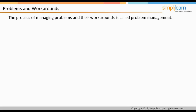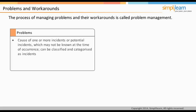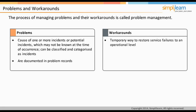The process of managing problems and solutions to problems is called problem management. In the context of ITIL, a problem is the cause of one or more incidents or potential incidents, and the cause may not be known at the time the incident occurs. Problems are classified and categorized as incidents and documented in problem records. A workaround is a temporary way to restore service failures to an operational level — for example, rebooting a server. We might not know why the server failed, but rebooting it brings the service back up. Workarounds are used for reducing or eliminating the impact of an incident or problem for which a full resolution is not yet available.